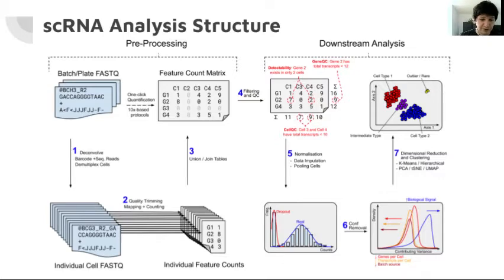In the downstream analysis on the right you have your standard filtering QC step followed by normalization and confounder removal to boost a biological signal whilst reducing variation from unwanted technical and biological sources such as library size, amplification bias and cell noise.